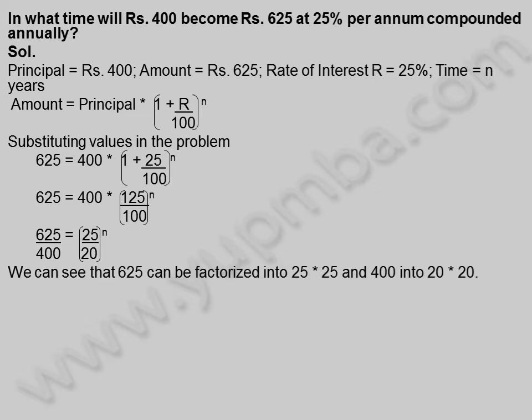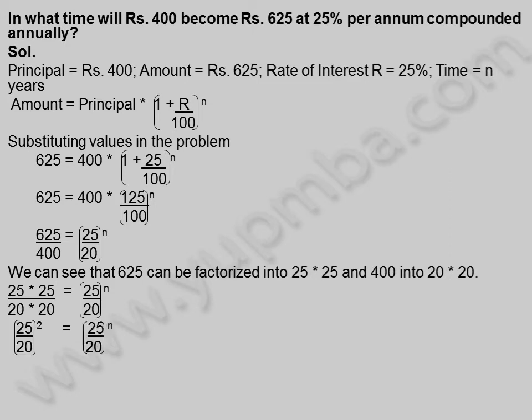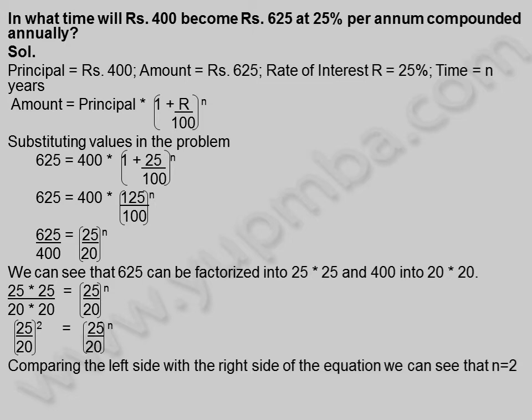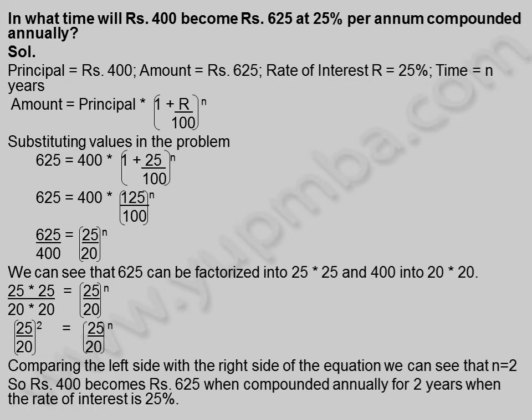We can see that 625 can be factorized into 25 into 25, and 400 into 20 into 20. So 25 into 25 divided by 20 into 20 is equal to 25 by 20, whole power n. Therefore 25 by 20, whole square equals 25 by 20, whole power n. Comparing both sides, n is equal to 2. So 400 rupees become 625 rupees when compounded annually for 2 years.